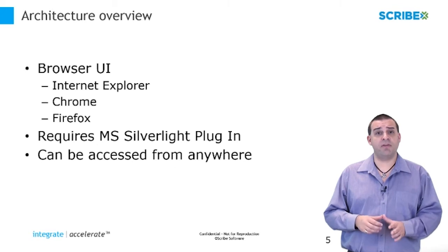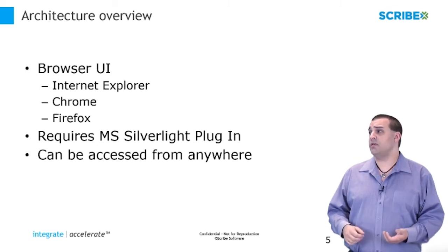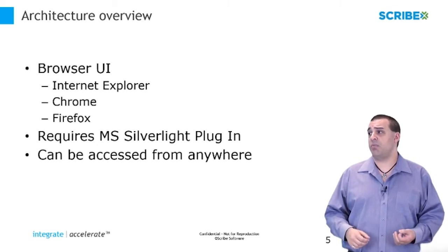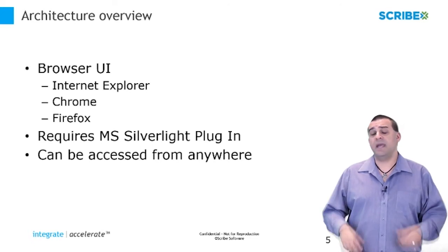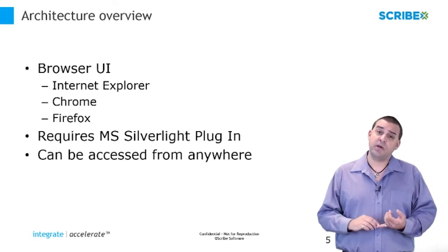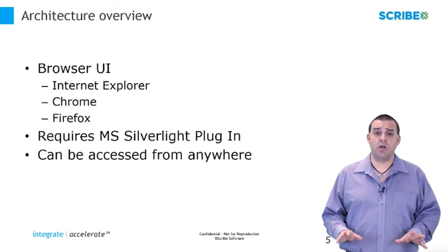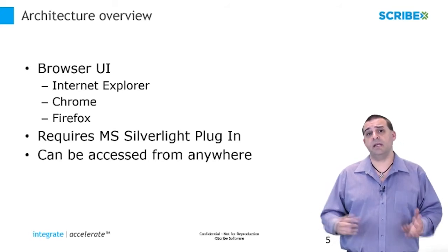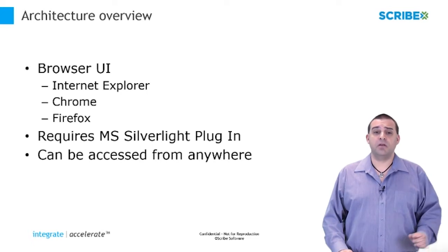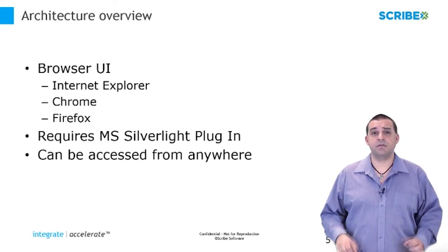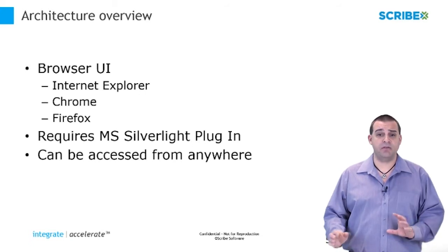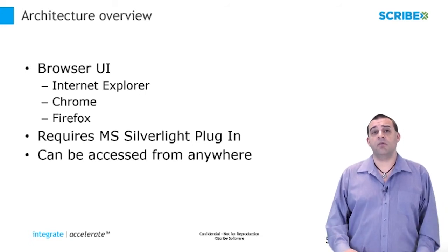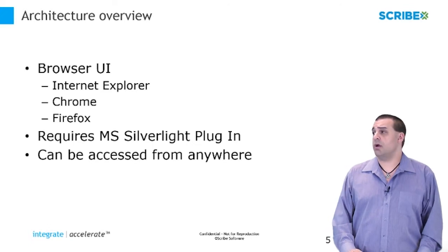Scribe Online is accessed through a browser — Internet Explorer, Chrome, or Firefox — as long as it supports the Microsoft Silverlight plugin, so it can be accessed from anywhere. Once your agents are set up and your connections to all of your applications are put together, a developer, consultant, or integration professional can access the Scribe Online maps, manage those maps, and manage the timing from any browser from anywhere.